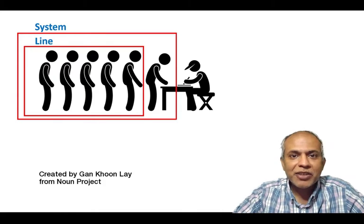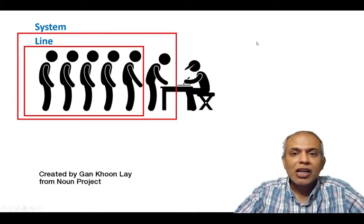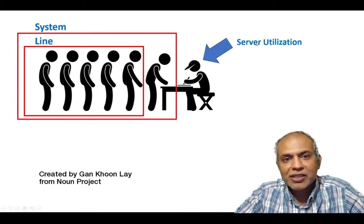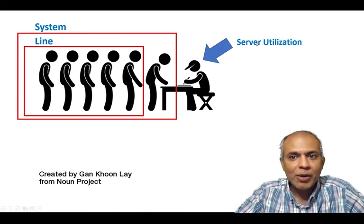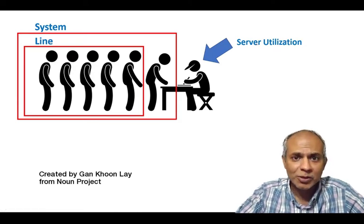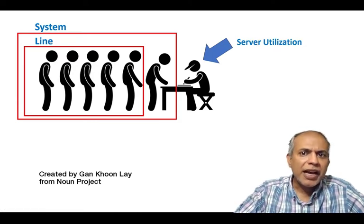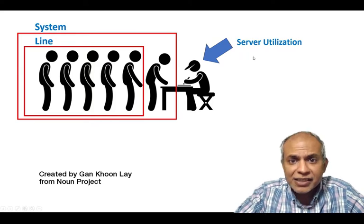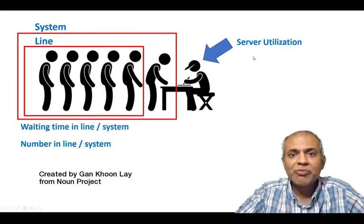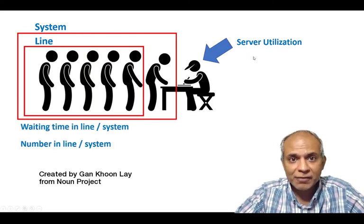And the way the metrics are designed, the two metrics that we talked about: the first metric is about server utilization, or how busy the server is. And the next set of metrics are about the waiting.